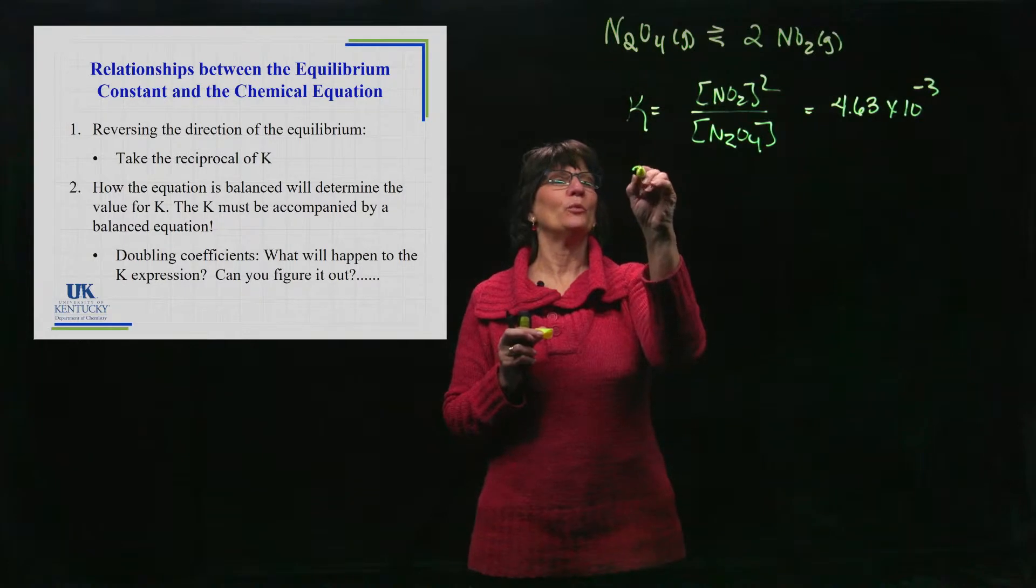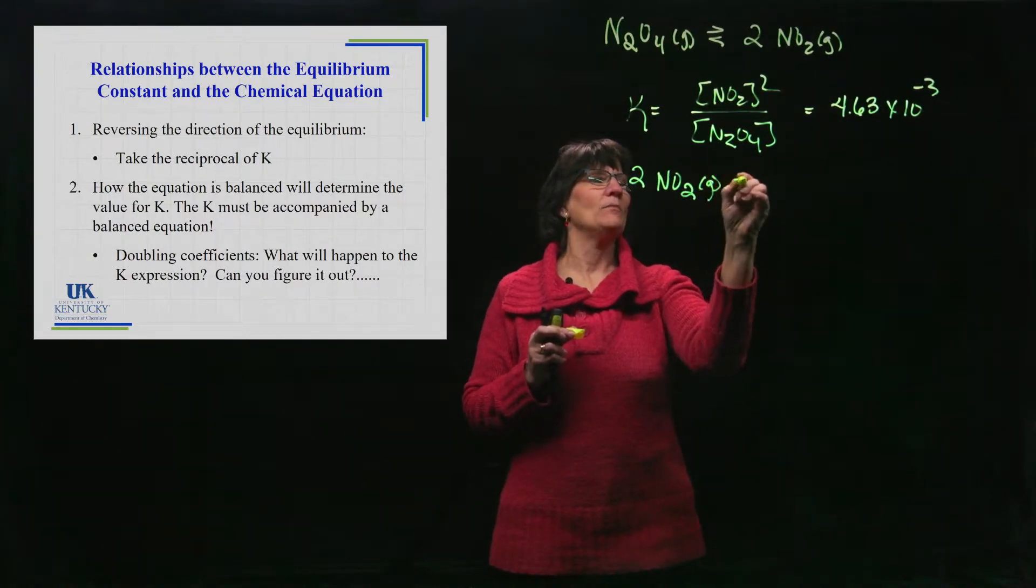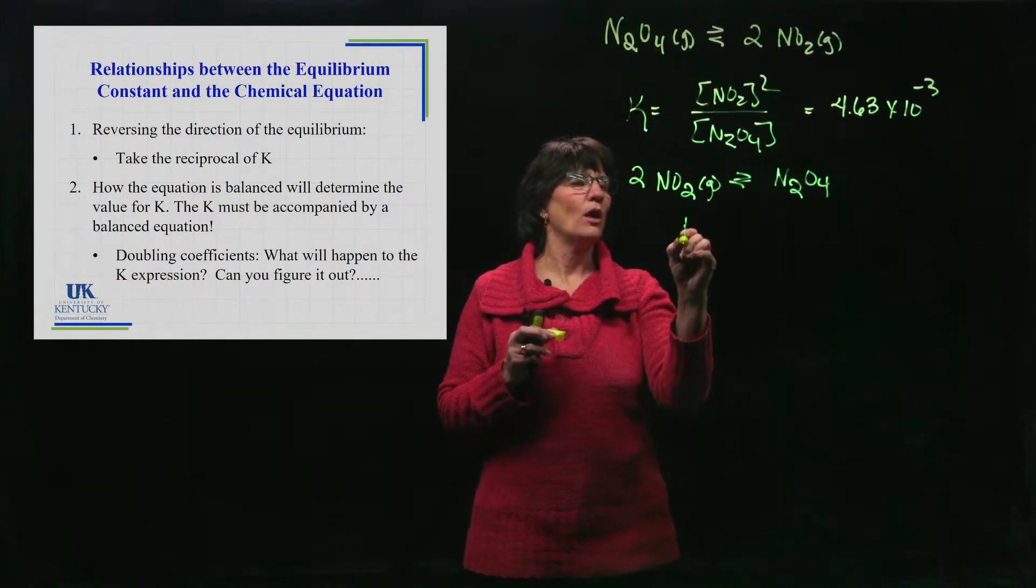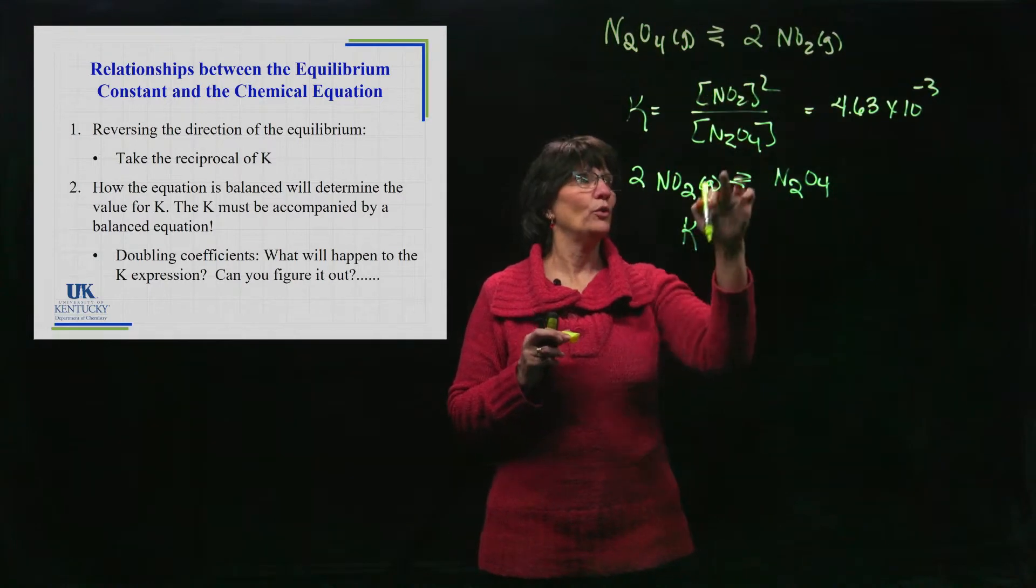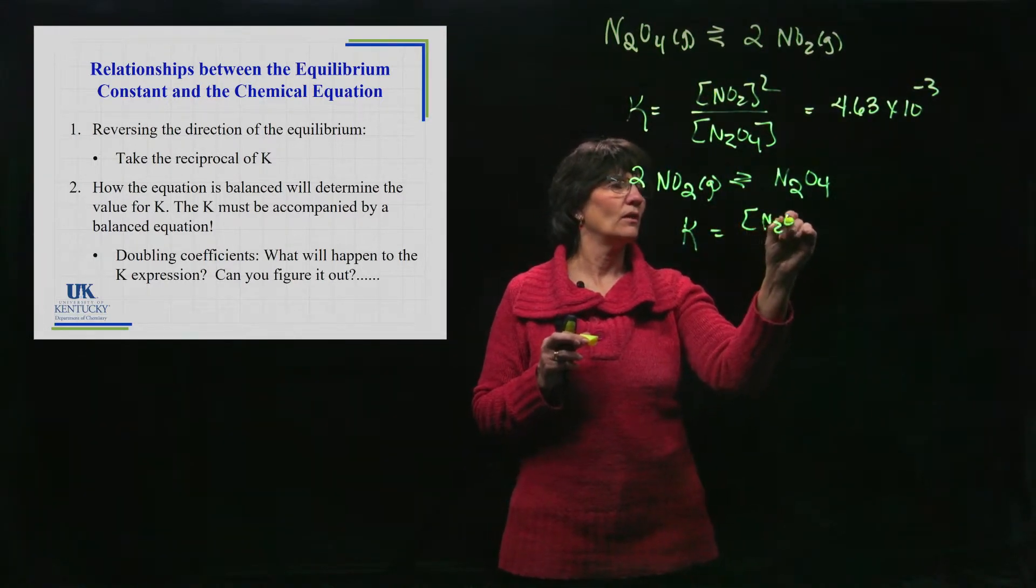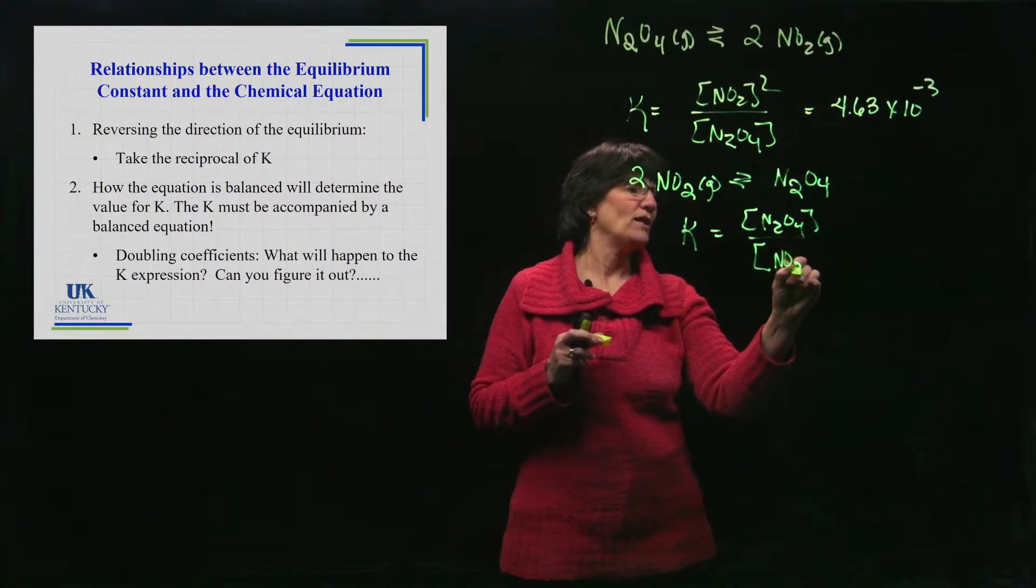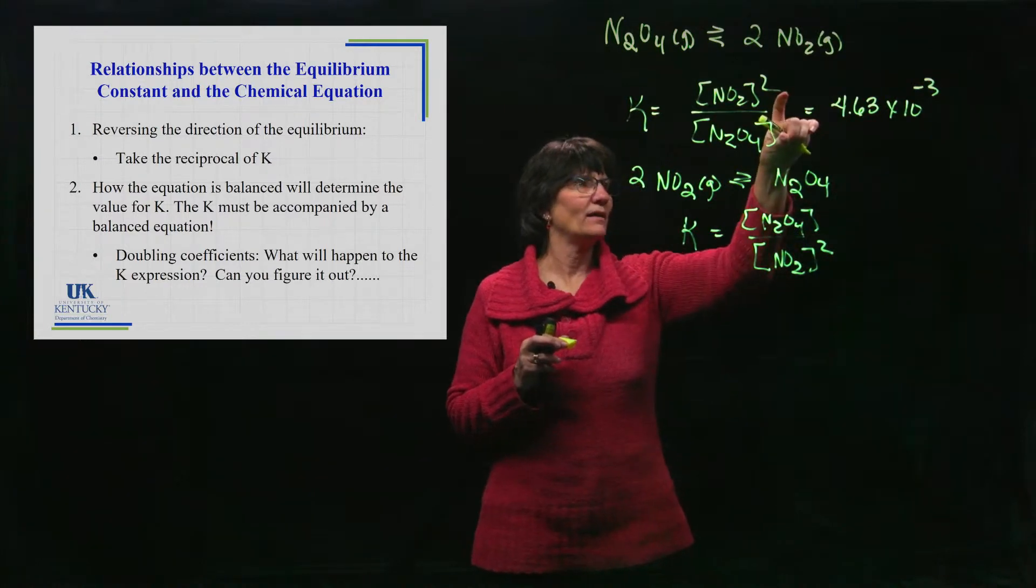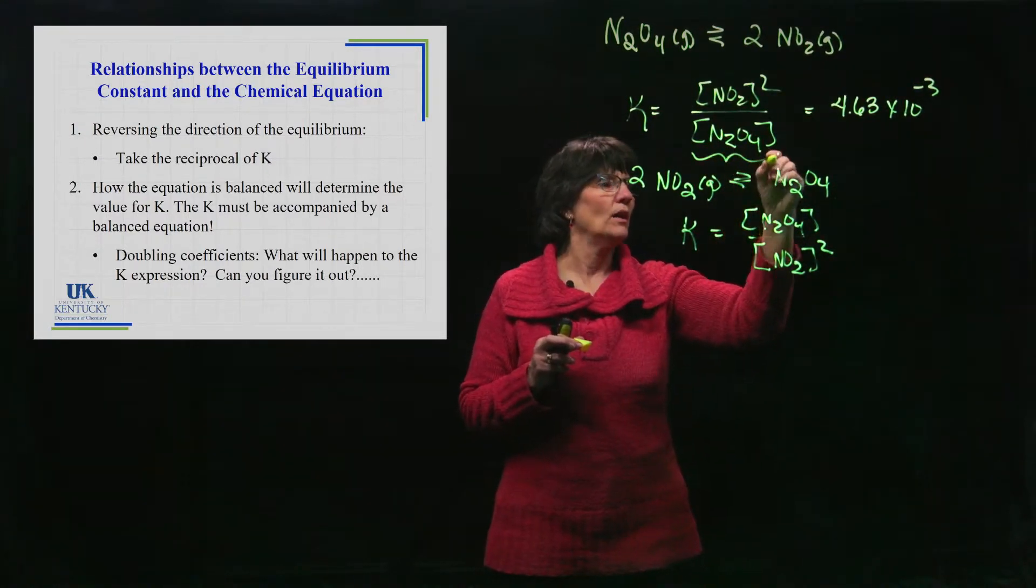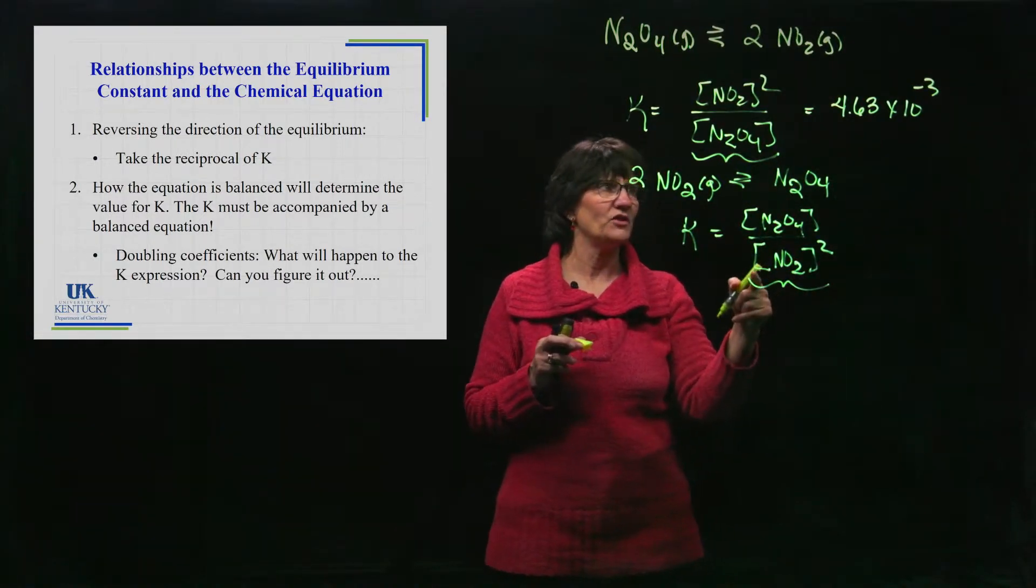Now if we reverse the reaction, will its K still be this number? Well no. If we reverse the reaction, then the K is no longer NO2 over N2O4. It's still products over reactants raised to the power of their coefficients. Look at this compared to that. What is the difference? Well this is the reciprocal of it.